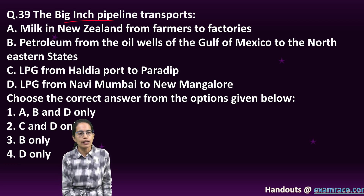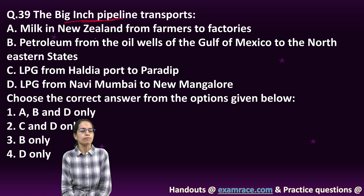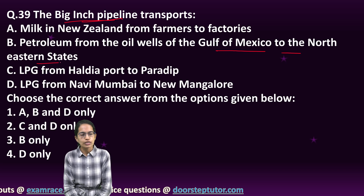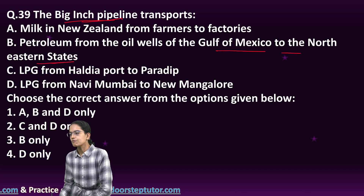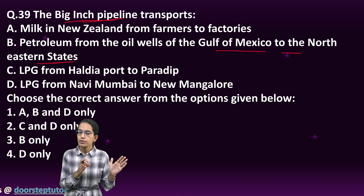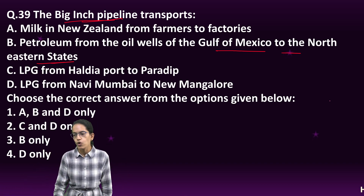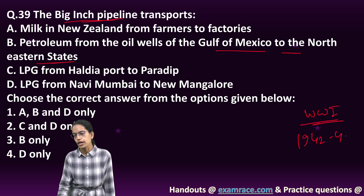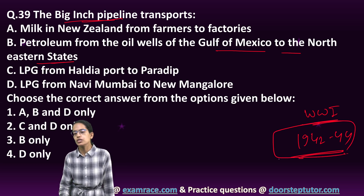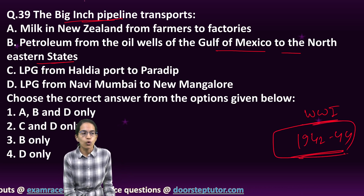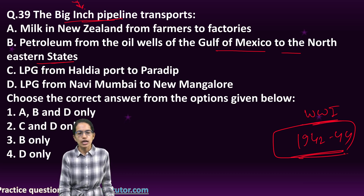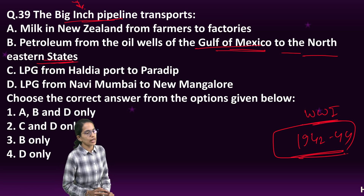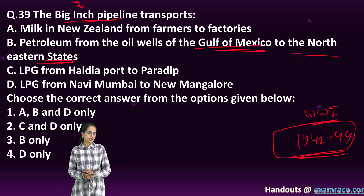The next is the Big Inch Pipeline. The Big Inch Pipeline is a famous pipeline that connects the Gulf of Mexico to the northeastern states. The pipeline runs from Texas to New Jersey and was built between 1942 to 1944 as an emergency measure in the United States during World War II. It was called the Big Inch Pipeline, running from the oil wells of the Gulf of Mexico to northeastern states. So B is the right answer.